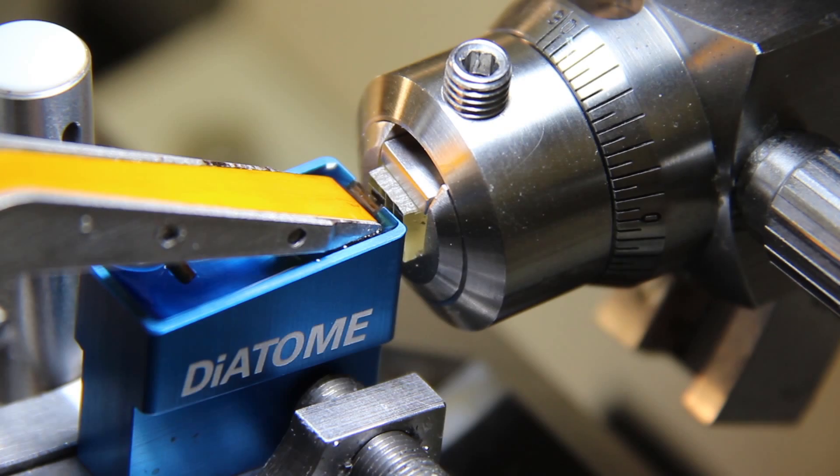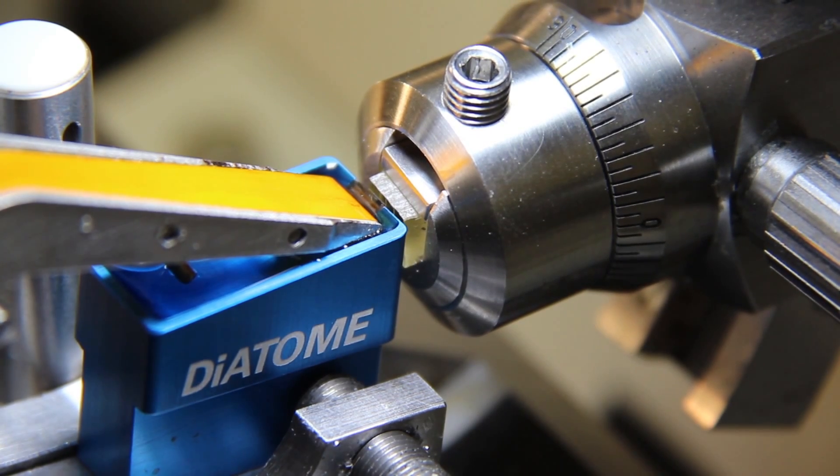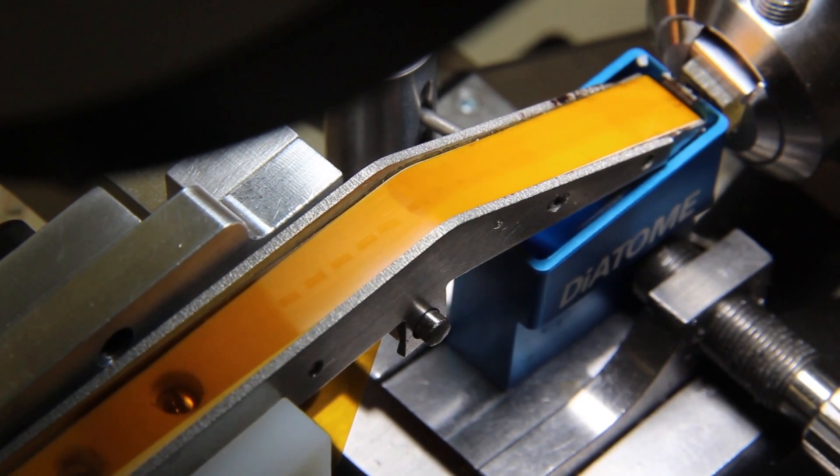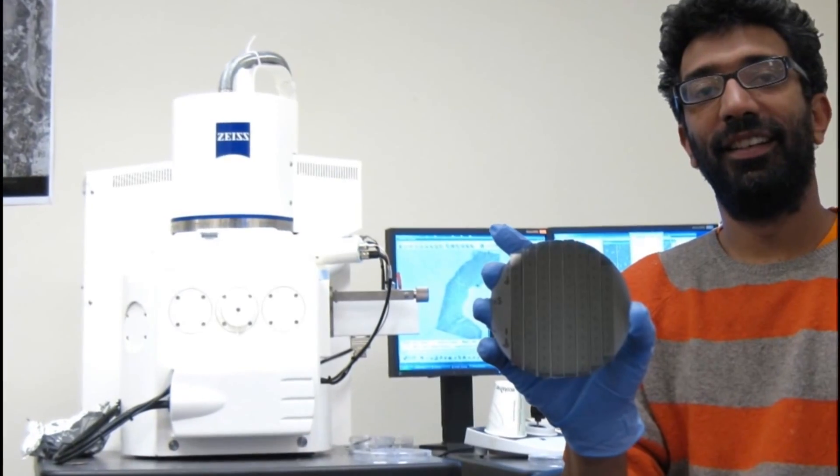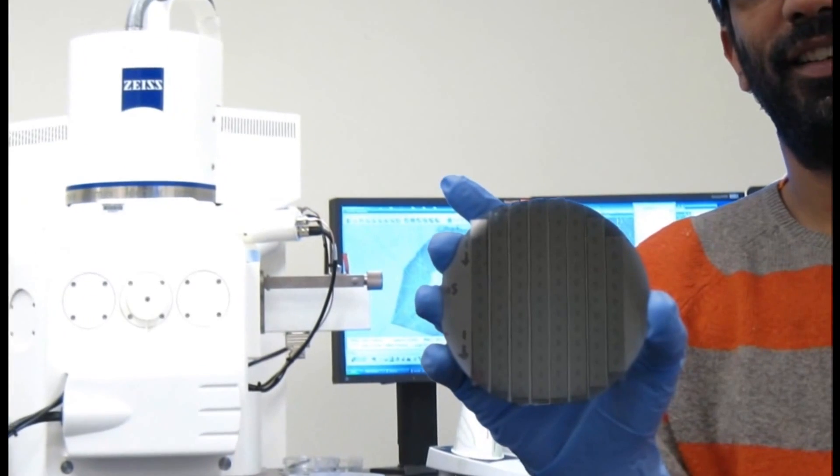So Ken Hayworth, together with Bobby Casturi and Richard Schalek, came up with a new method which they called ATOM, which stands for Automatic Tape Collecting Ultramicrotome, which picks up the slices as they come off the ultramicrotome onto tape. And we can then image these in a scanning electron microscope.